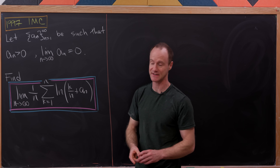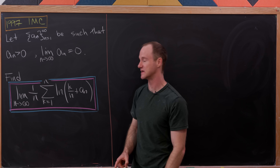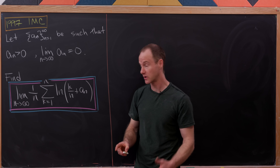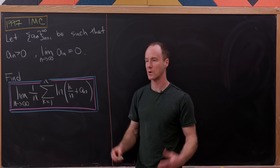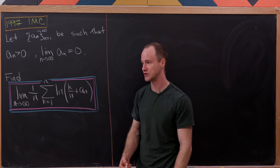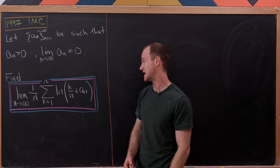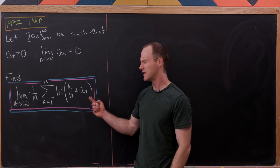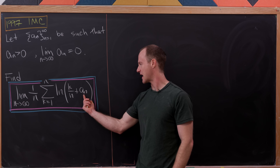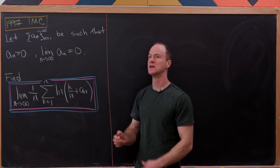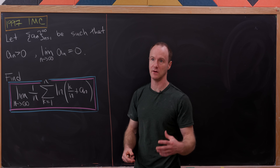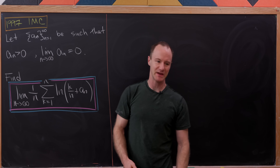Any time you have a limit that has a one over n term and then a sum with n terms, you probably want to transform that into an integral using a limit of a Riemann sum definition. The difference here is that we have a number a_n, which is tweaking this to be slightly away from a clean integral, but I think we can still use that strategy, especially with the following observation.